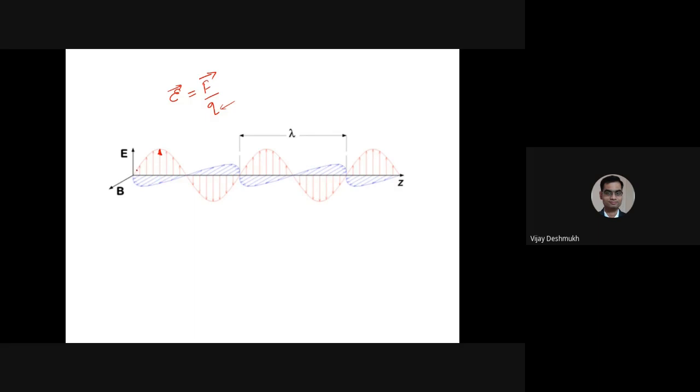This field vector will only travel in, suppose this is X and this is Y, so this will only oscillate in XZ plane. This is the Z axis. Whereas we can talk about this as the YZ plane in which we have this blue colored magnetic field vector.